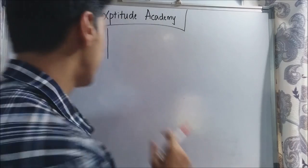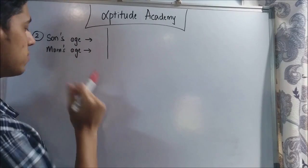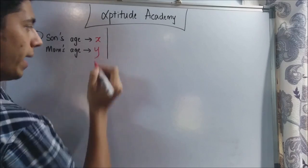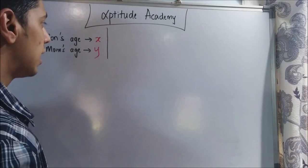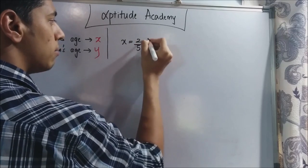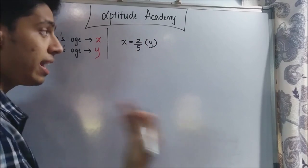Now they have said that the present age of the son is 2 fifth of mom's age. Let us assign the current age of the son as x and the current age of mom as y. Now they have said that the current age x will be 2 fifth of the mom's age.